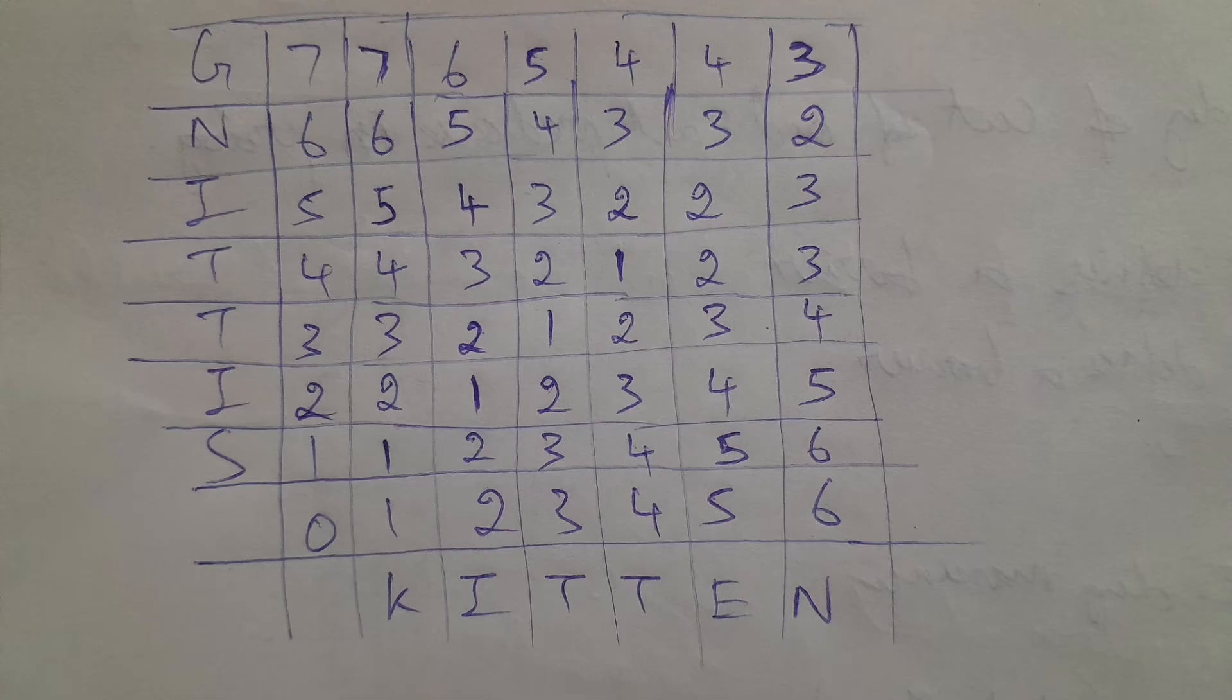In the next row, when comparing k and i, both are different, so we compare 2, 1, 1. The minimum is 1, we add 1 and get 2. Then comparing i to i, both are the same, so we replace with the diagonal element. The same way we complete the entire row. Then the next row: t and k are different, i is also different, and t and t are the same, so we use the diagonal approach. Proceeding through the entire table, we get this result.